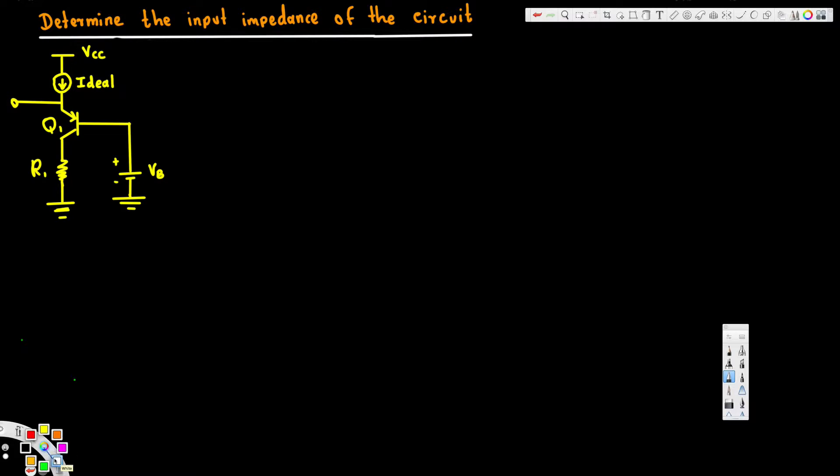The equivalent model will look like this. Let's go ahead and draw that. Okay, here this one connected to the ground, and this one, this one, like this, and here we go. This is connected to the ground, and this one also connected to the ground.